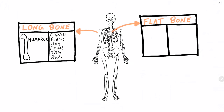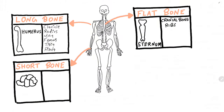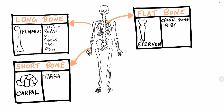The next type of bone is the short bone. A short bone is cube-shaped and is approximately equal in length, width, and thickness. Short bones are found in the human skeleton in the carpals of the wrist and in the tarsals of the ankle. Short bones provide structural stability and some limited motion.